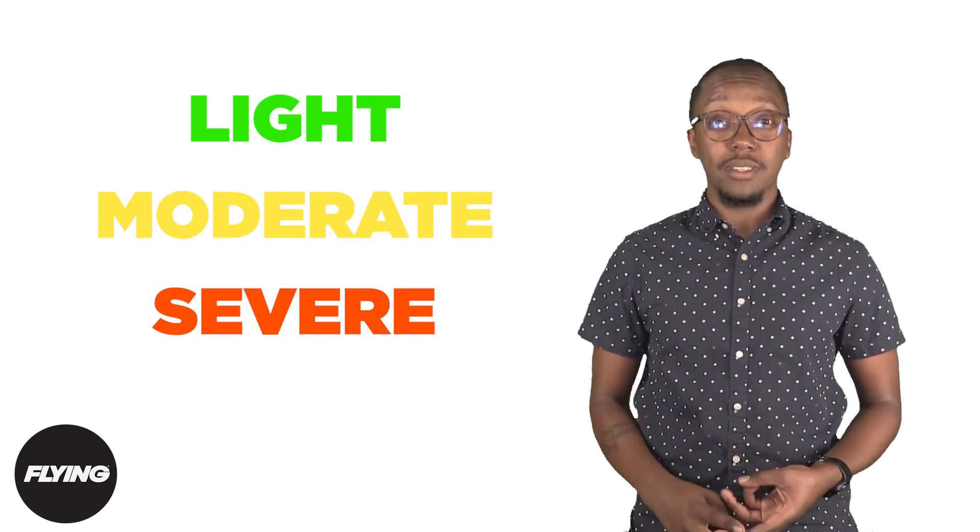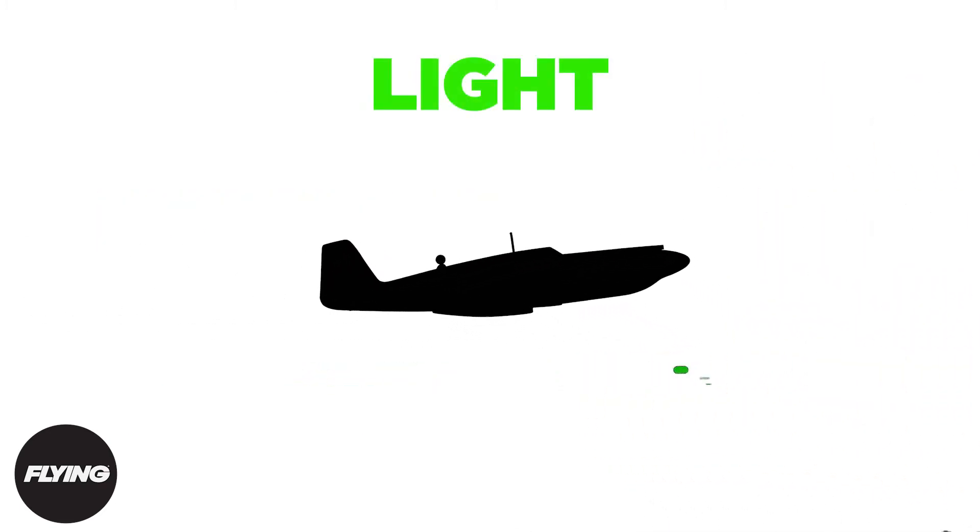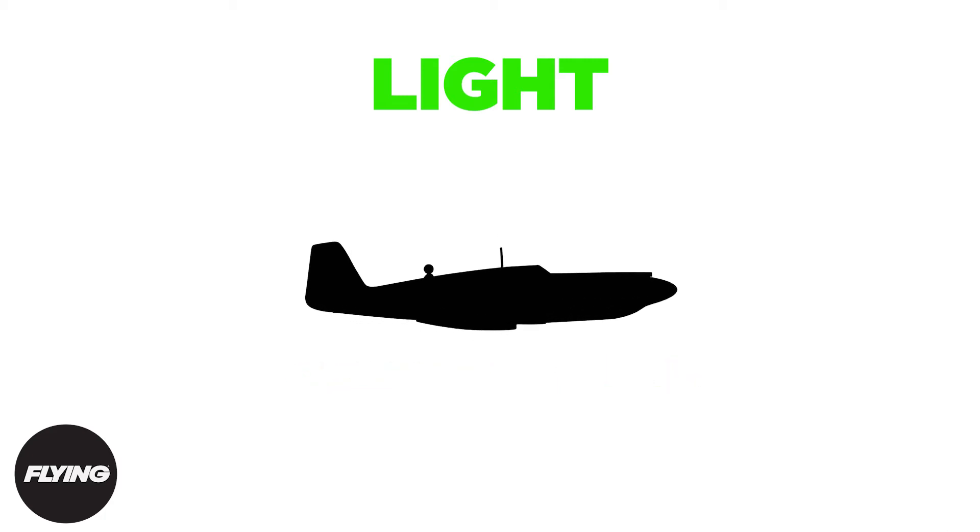The intensity of turbulence can be split into four levels: light, moderate, severe, and extreme. Light turbulence causes a slight change in altitude or attitude. Passengers may experience a few bumps here and there, but not enough to make a good flight go bad.